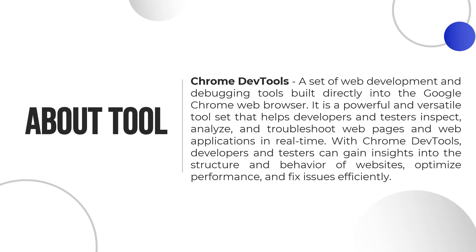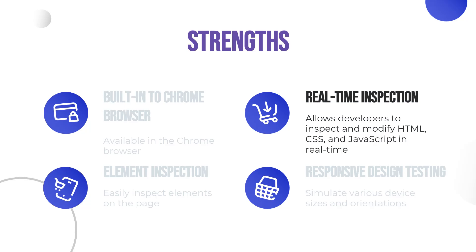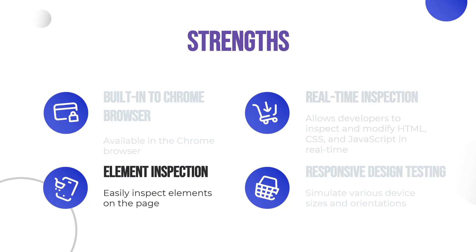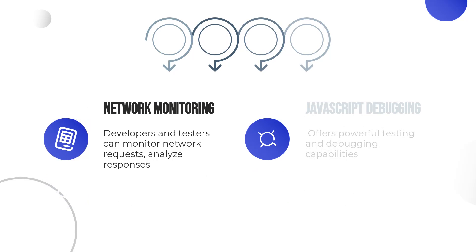Some pros of using Chrome DevTools for web app testing: Built-in to Chrome Browser — Chrome DevTools is readily available in the Chrome browser, eliminating the need for additional installations or setup. Real-time inspection — DevTools allows developers and testers to inspect and modify HTML, CSS, and JavaScript in real-time, aiding in identifying and fixing issues quickly. Element inspection — you can easily inspect elements on the page, view their properties, and make temporary changes for testing purposes. Responsive design testing — DevTools provides responsive design testing by simulating various device sizes and orientations, ensuring consistent user experiences across devices. Network monitoring — developers and testers can monitor network requests, analyze responses, and ensure proper data exchange with servers.